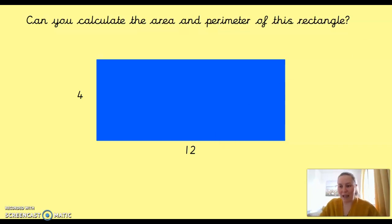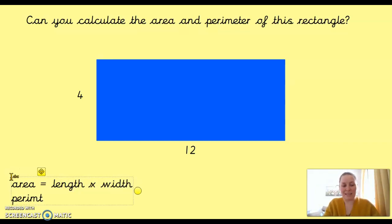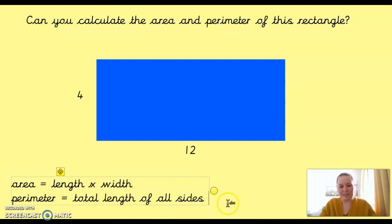OK, so for a rectangle, the area is the length times the width, and the perimeter is the length all the way around the outside. So, it's total length of all sides. OK, so if you needed that little hint, now pause and go off and work it out.